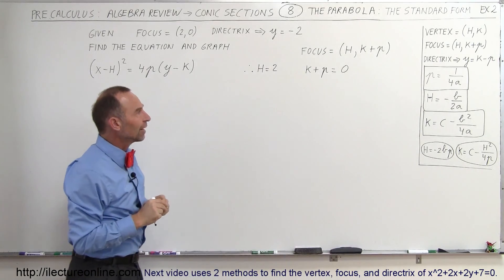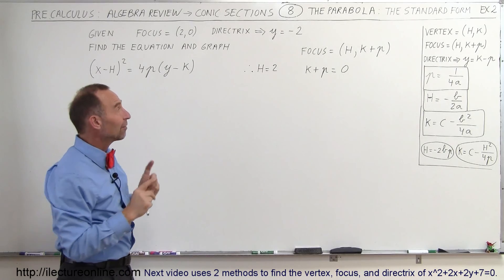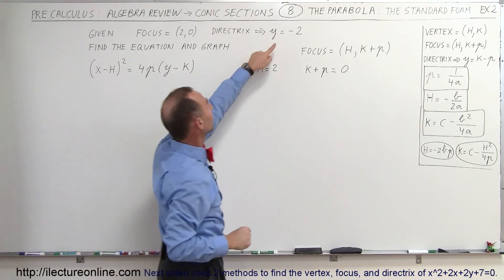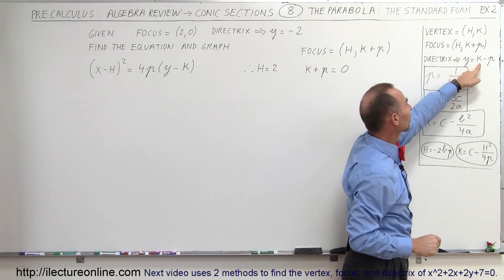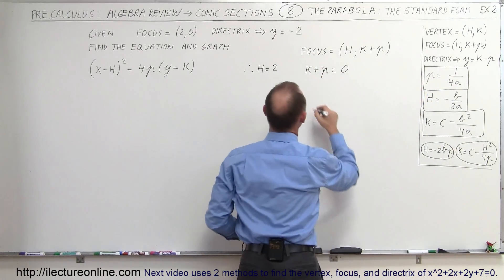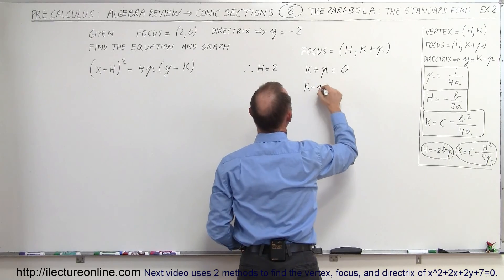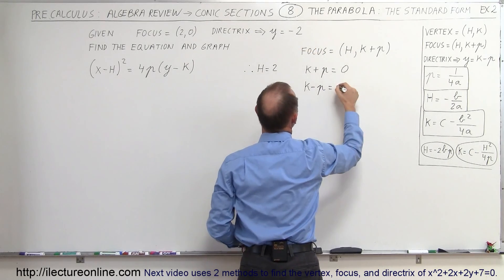Alright, that's not enough to find out what either k or p is, but we have a second way of looking at it. We could look at the directrix and we know that the equation of the directrix is equal to k - p. So we know that k - p is therefore equal to -2.